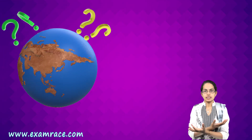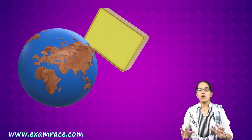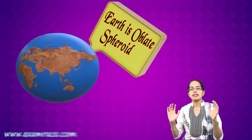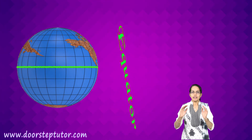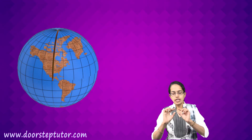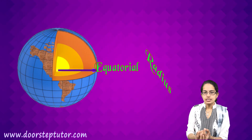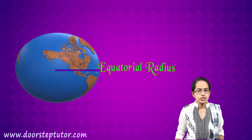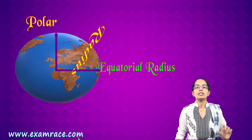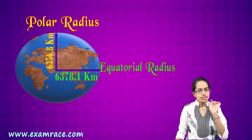There was numerous discussion that surrounded the shape of the earth and finally what came up was that the earth is an oblate spheroid. That means it is not exactly a sphere — it is somewhat bulged towards the equator and flattened towards the pole. So the equatorial radius and the polar radius are not the same.